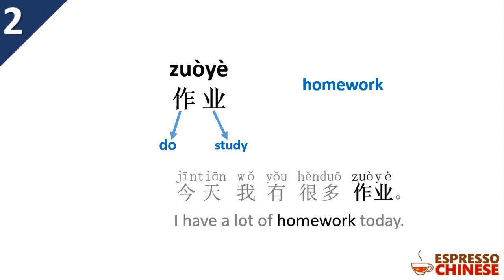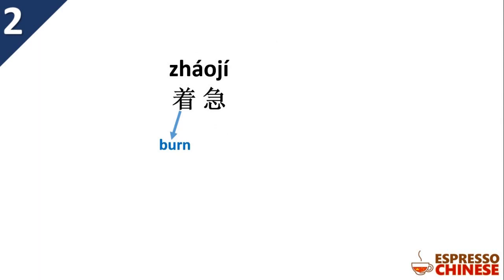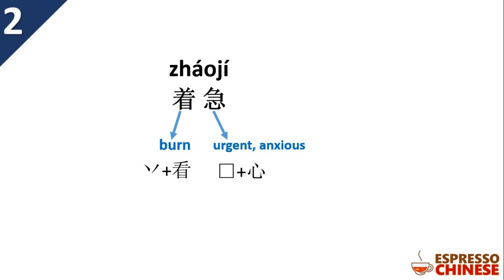着急 (zháojí). 着 means 'to burn' — notice the two dots. 急 means 'urgent' or 'anxious'. In 急, you'll find a heart radical at the bottom, because something to do with your feelings comes from the heart. In ancient times, people thought feelings came from the heart; now we know it's the brain, but when they invented this character, they believed the heart was thinking. Together, 着急 means 'worried' or 'anxious'.